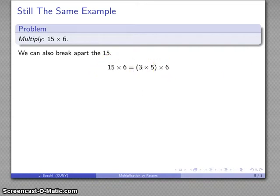And I can group however I feel like it. 5 times 6, I like that one. 5 times 6, easy to do. That's 30. Times 3 is 90, once again.